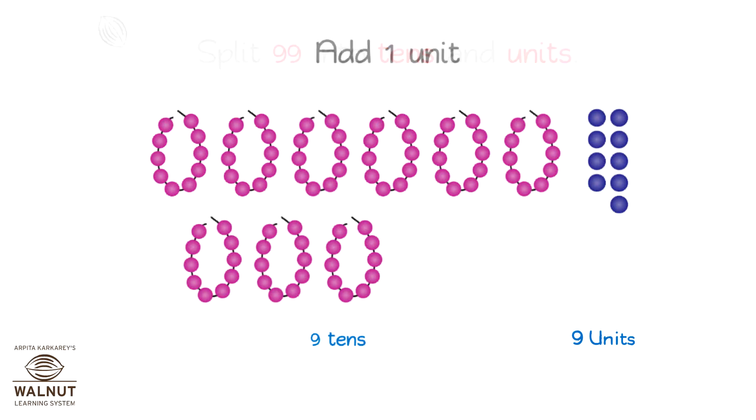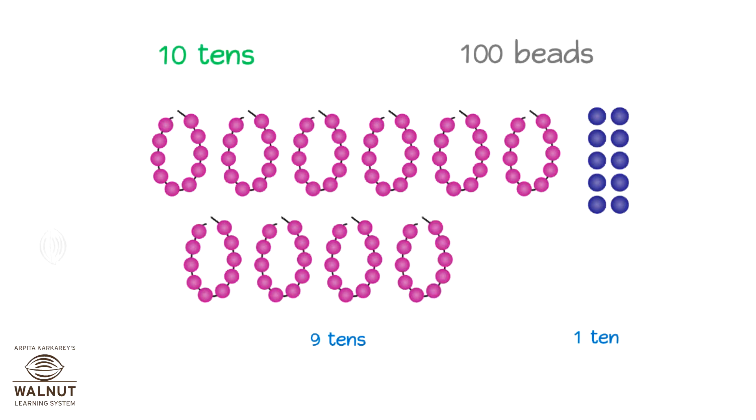Let us add 1 to 99. What do we get? We get 9 tens and 10 units. 10 units makes 1 ten. So we have 9 tens and 1 ten. How many beads do you see? We see 100 beads. 9 tens plus 1 ten is 10 tens. So 10 tens make a hundred.